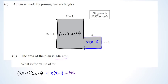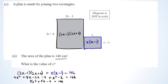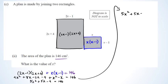Expanding: 2x × 2x = 4x², 2x × 4 = 8x, −1 × 2x = −2x, −1 × 4 = −4, then plus x² − x = 146. Simplifying: 5x² + 6x − x = 5x², 5x − 4 = 146. Bringing 146 to the left-hand side: 5x² + 5x − 150 = 0. Dividing through by 5 gives x² + x − 30 = 0.